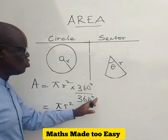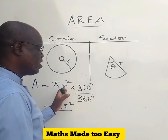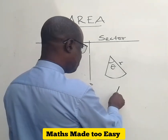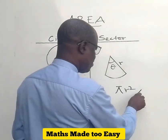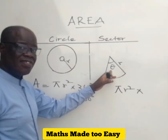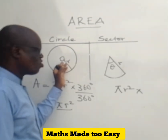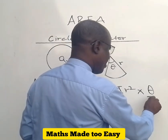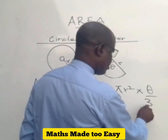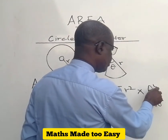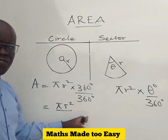So if you have the knowledge of this, you should not have a problem with this. For the sector, the area of a sector will be related to this — it is pi r squared times theta over 360, where theta is part of the angle and the total angle of a circle is 360. So you can see the similarity and the differences.